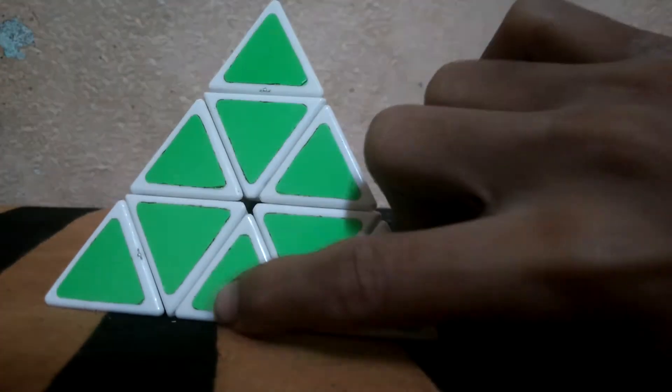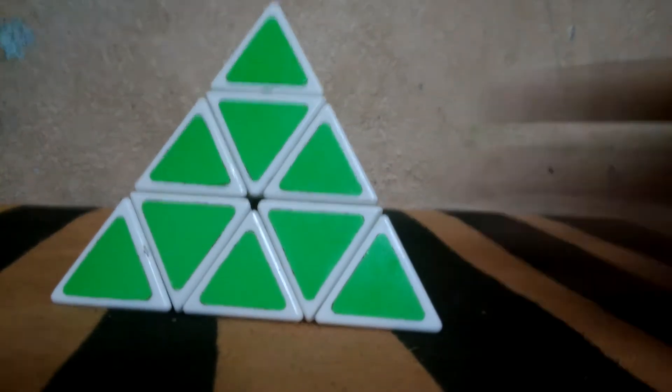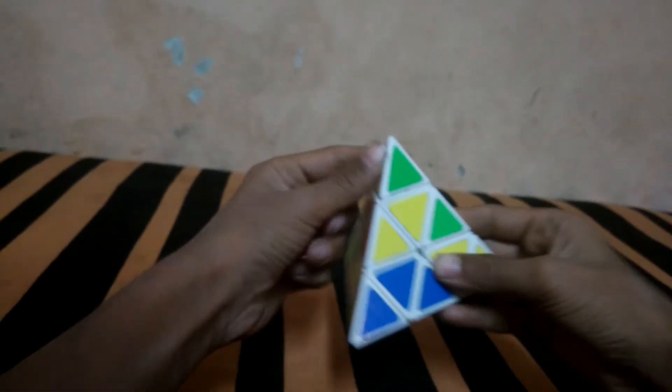Let's get started. Now we have scrambled it all. First we have to align the tips to know where the respective colors are. We'll start with yellow.